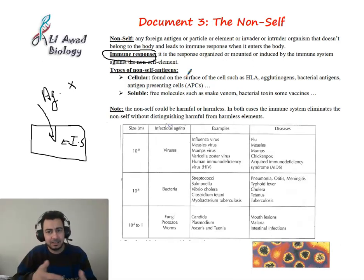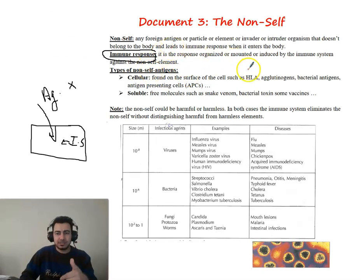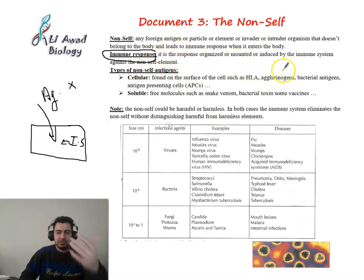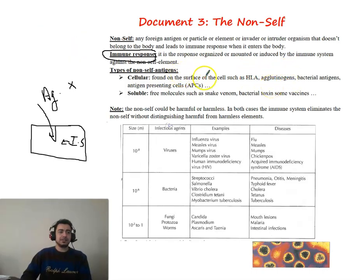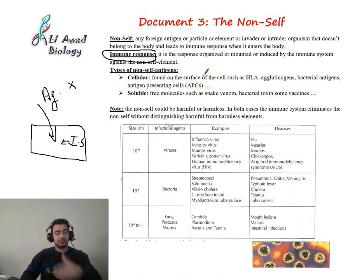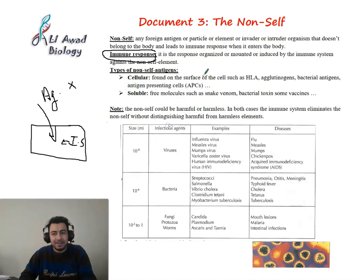The immune response is the response organized and mounted by the immune system against any foreign body in our body, regardless of whether it is harmful or harmless. The immune system attacks it to eliminate it, though sometimes the immune system fails.